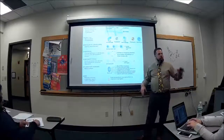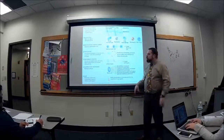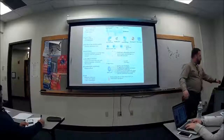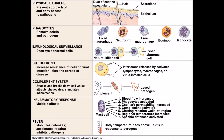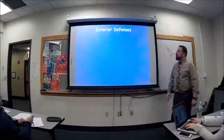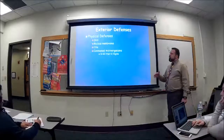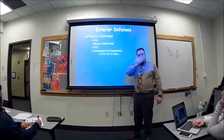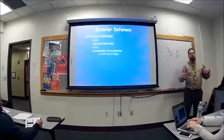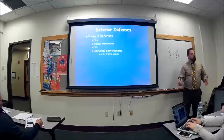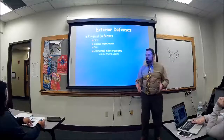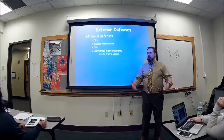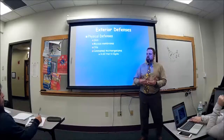The complement system — we talked about the oil can, opsonization, lysis, and inflammation. We also talked about the five cardinal signs and fever. We have exterior defenses like skin, cilia, and commensal microorganisms — things our body lives with in symbiosis. In the mouth, on our skin, in the vagina, in the large intestine, there are loads of bacteria. They're living on us, and in many cases they benefit us — helping break down certain substances and making vitamin K.